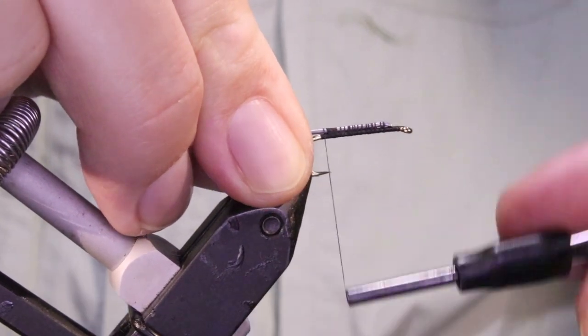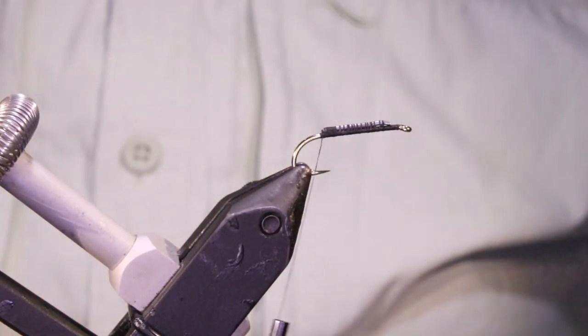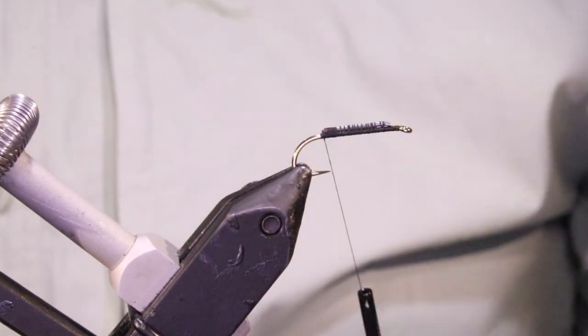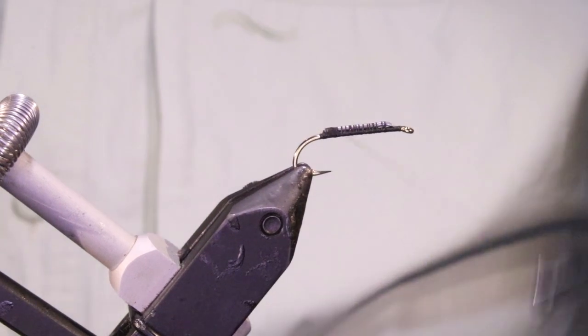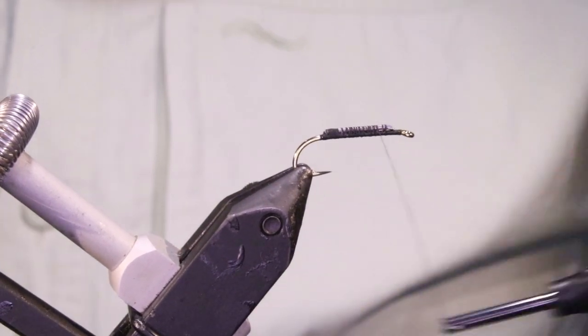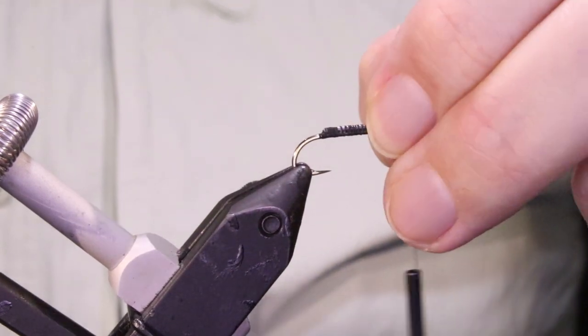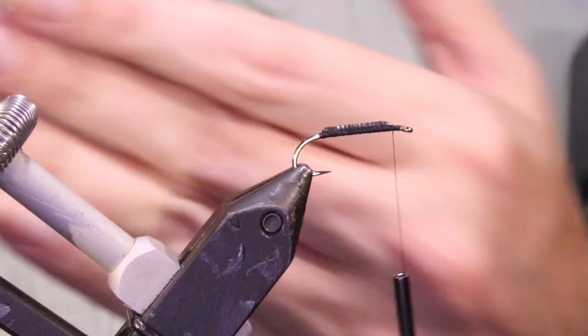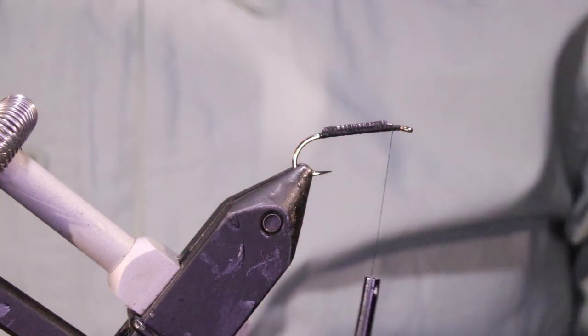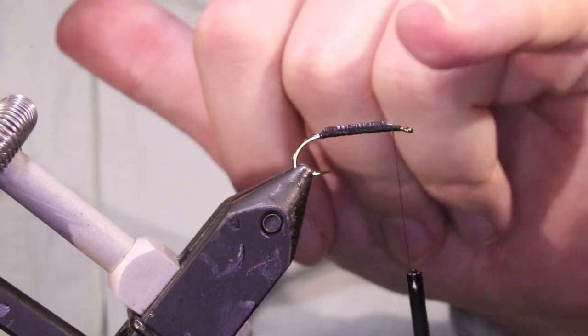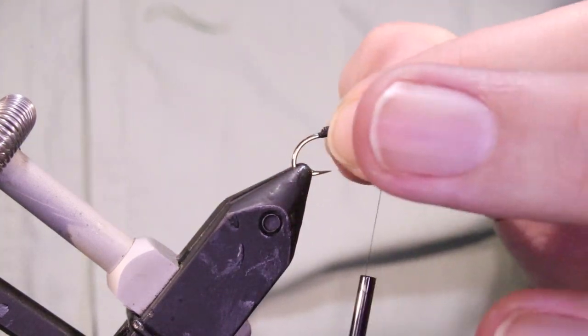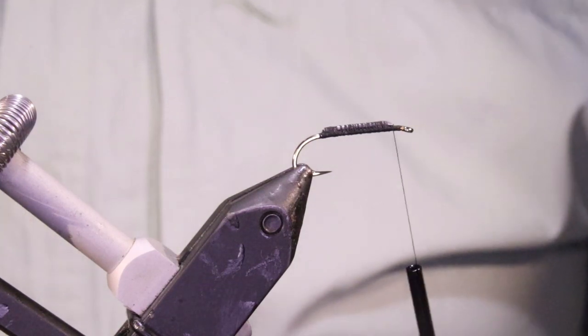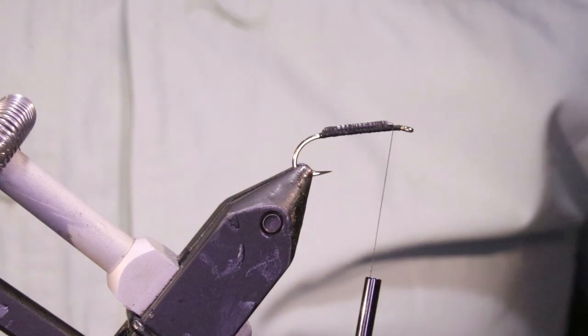So, I've got my hook in my vise, and it's a Kamasan B200, it's a deep water nymph, really strong hook, really heavy wire. I've run on some black uni in 8.0, and I've just run a single strand of 0.035 lead wire straight along the back. The way I'm going to tie the marabou wing in, it'll turn over. I've just covered that with my thread, and then I'm ready for my tail.